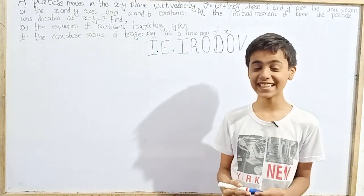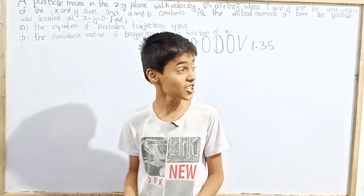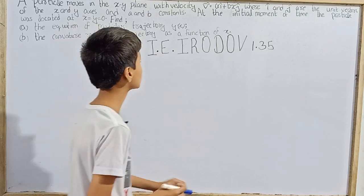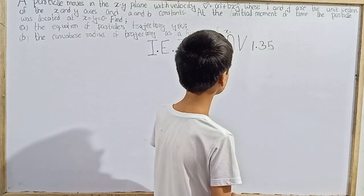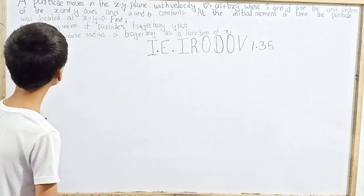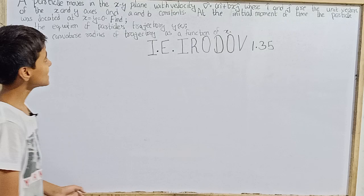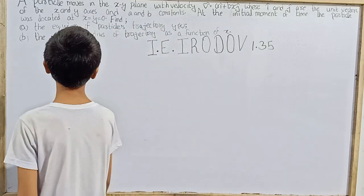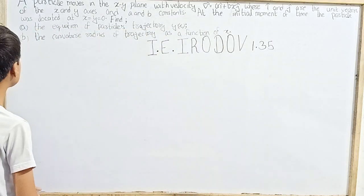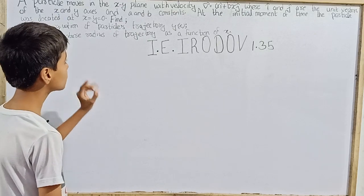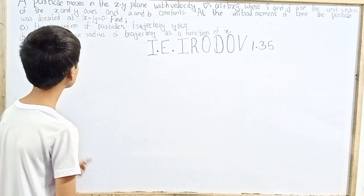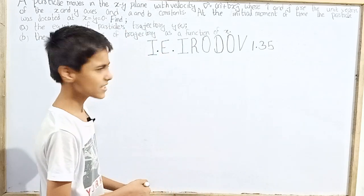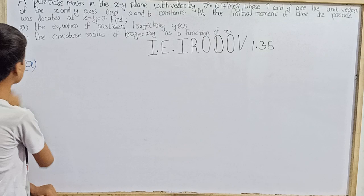Hello everyone, we are back with IE Irodov, and today we will solve question number 1.35: a particle moves in the xy-plane with velocity vector v equals a·î plus bx·ĵ, where î and ĵ are the unit vectors of the x and y axes and a and b are constants. At the initial moment of time the particle was located at x equals y equals zero. We need to find: (a) the equation of the particle's trajectory y as a function of x, and (b) the curvature radius of the trajectory as a function of x.